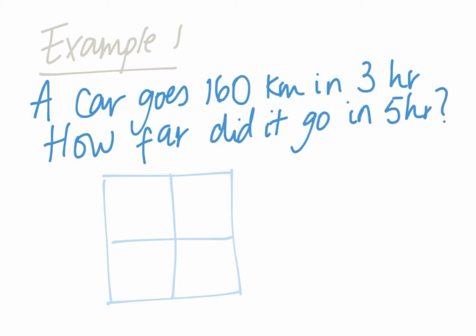So what you're going to do first is the box method. The first row is going to be your kilometers. Second row is going to be your time, the hours.